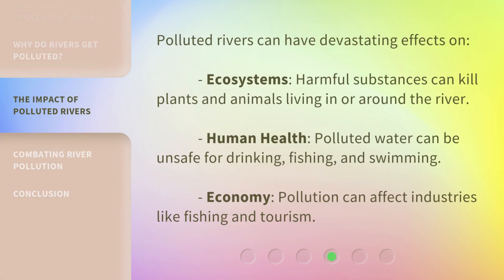Polluted rivers can have devastating effects on ecosystems — harmful substances can kill plants and animals living in or around the river. Human health — polluted water can be unsafe for drinking, fishing, and swimming. Economy — pollution can affect industries like fishing and tourism.